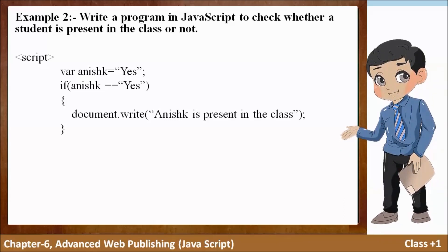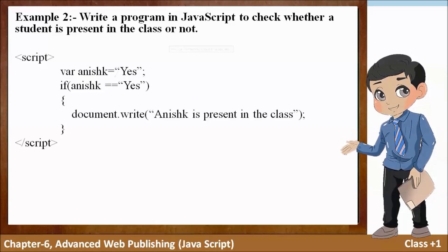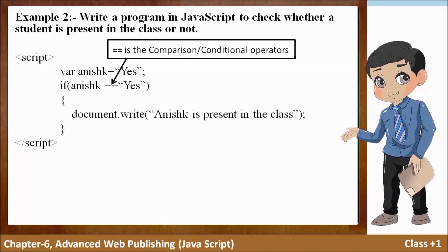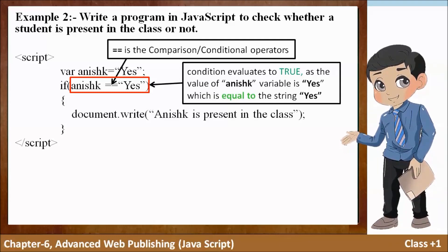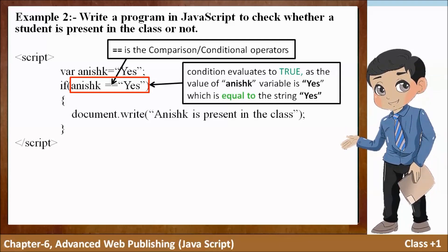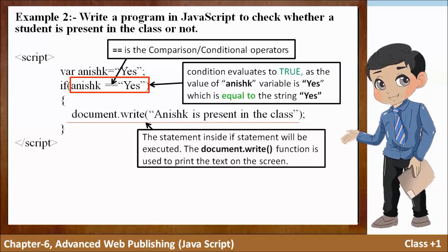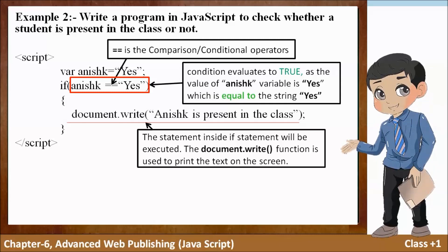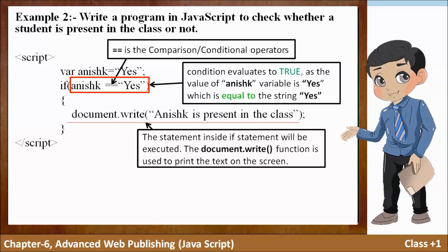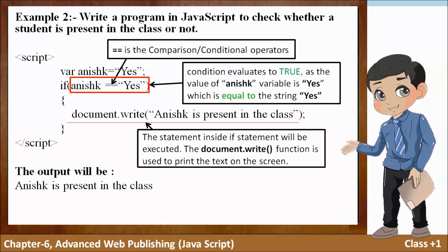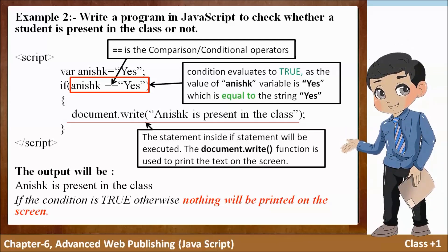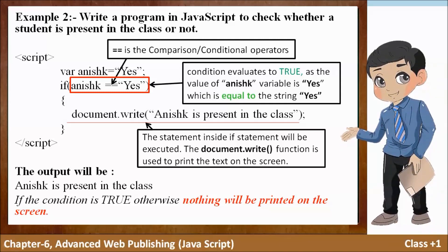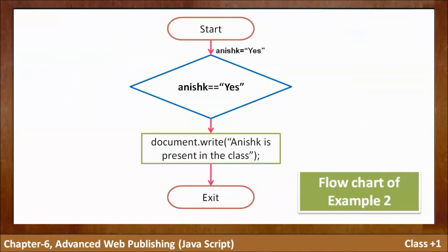Yahan double equals jo hai woh ek comparison/conditional operator hai. Is condition ka result aayega true kyunki anisk variable ki value 'yes' hai jo 'yes' string ke barabar hai. Toh yeh line execute hogi — document.write function ka use hum karte hain text ko screen par print karne ke liye. Hamari output aayegi 'anisk is present in the class' agar condition true hai, otherwise kuch bhi screen par print nahi hoga.